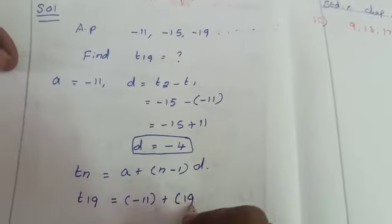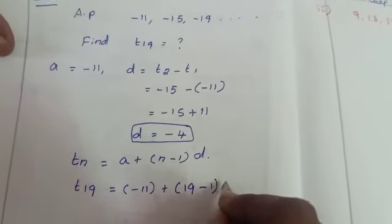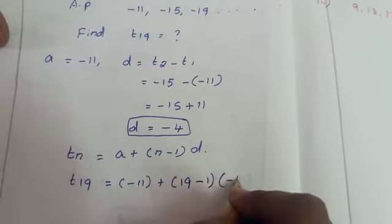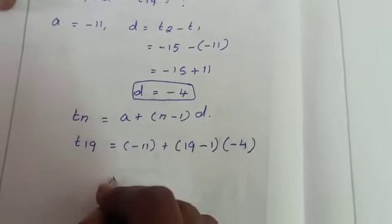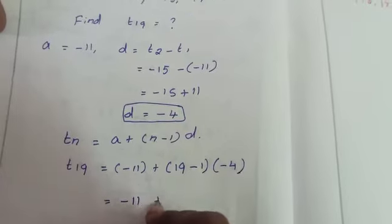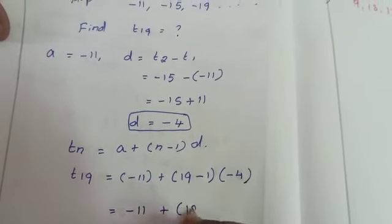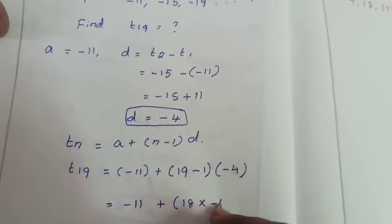Here n is 19, minus 1, into d is -4. Which is equal to -11 plus, 19 minus 1 is 18, into -4.